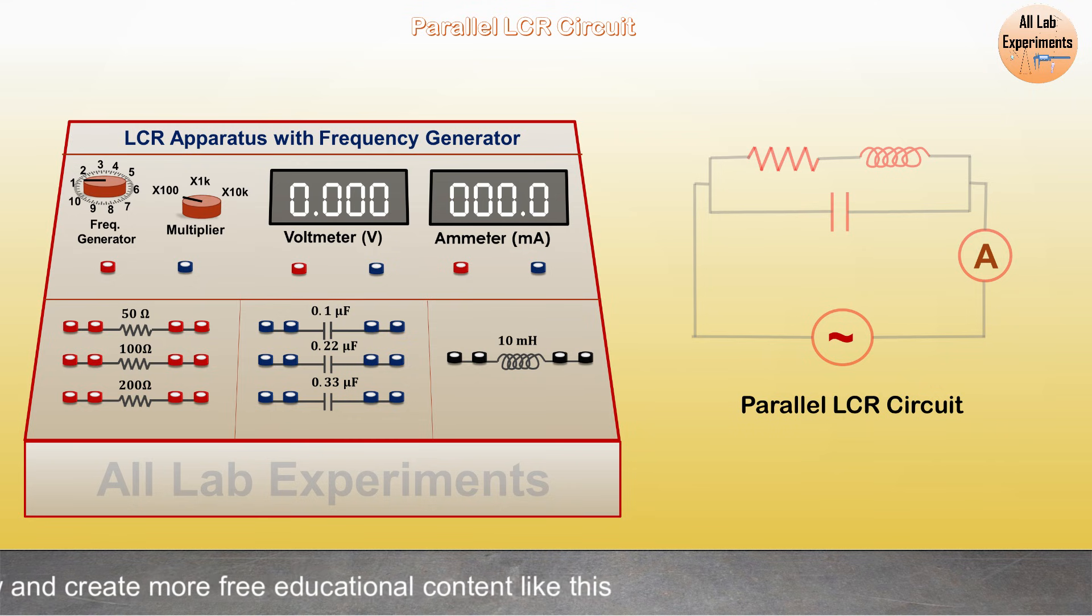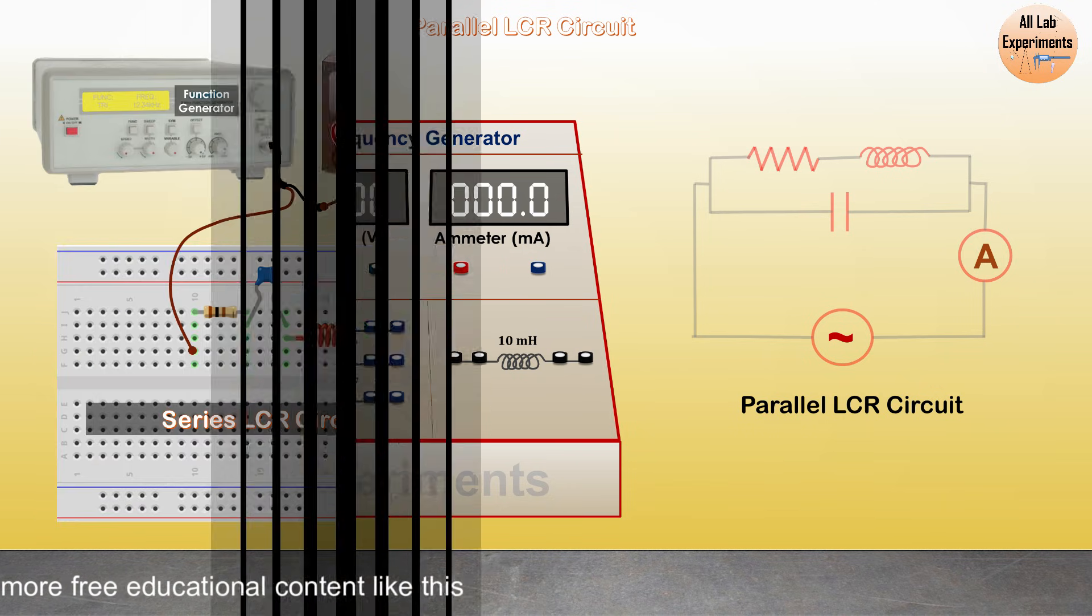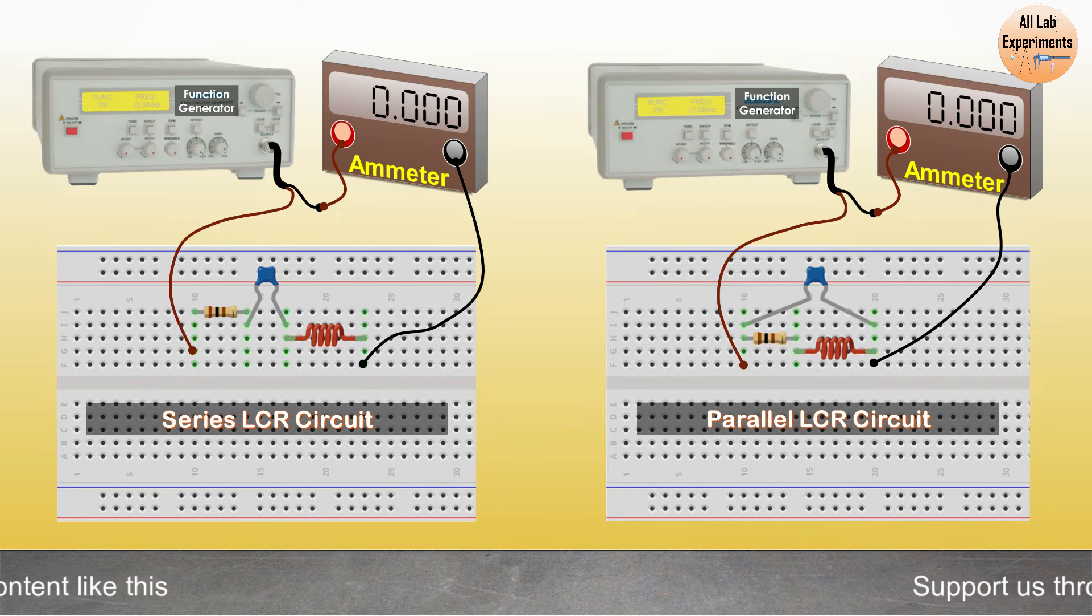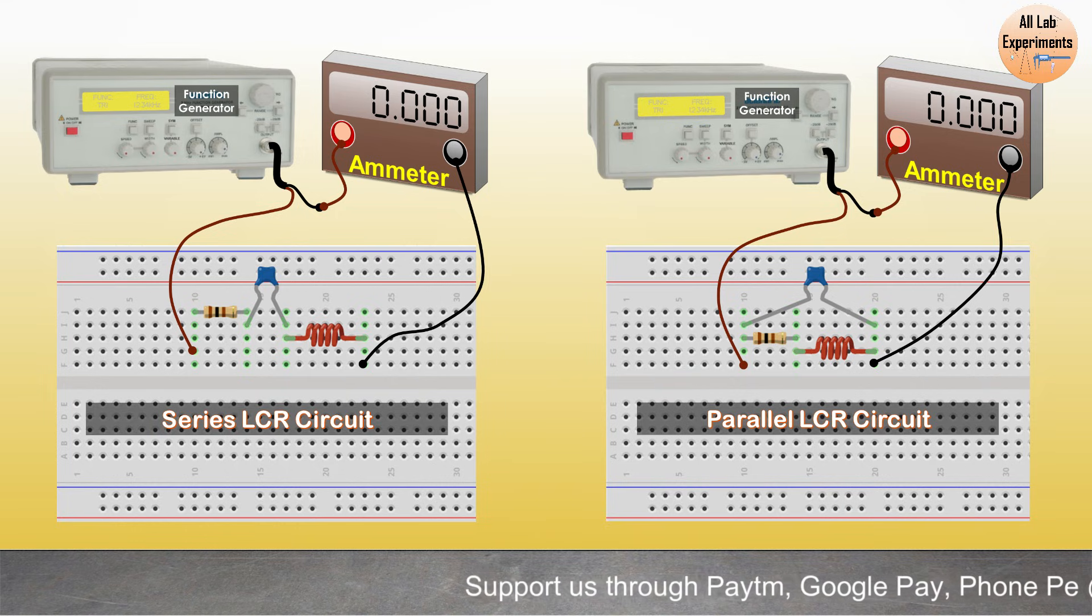But if you want to perform this experiment on a breadboard, then you need a separate ammeter and a function generator. As per the diagram used above in this experiment, we can make these two kinds of circuits on the board.